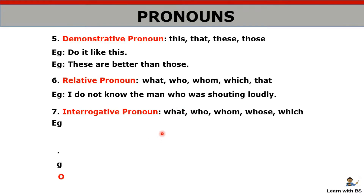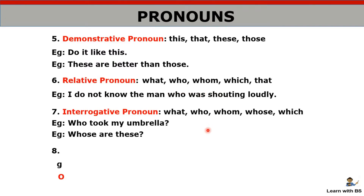Then we have interrogative pronoun. Again, relative pronoun and interrogative pronoun use the same words, which may cause confusion. The difference is: if you see a question mark at the end — 'Who took my umbrella?', 'Whose are these?' — these are interrogative pronouns. But when the word connects two clauses and shows relation — 'I don't know the man who was shouting' — that is a relative pronoun. Interrogative pronouns mostly appear at the beginning of a question.